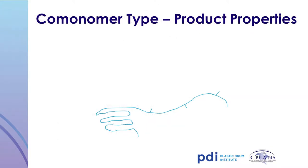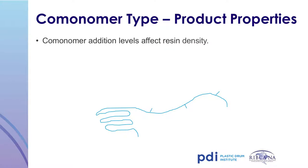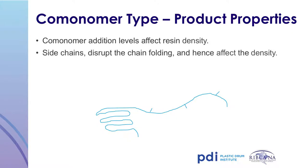The addition of co-monomer affects the density and stiffness of the resin. The side chains disrupt the folding mechanism of the long chains, lowering the resin's density and stiffness. Packaging manufacturers must balance resin properties to produce containers that can survive impact drop testing at cold temperatures and maintain the necessary stiffness. The co-monomer most commonly used for polyethylene in drum and IBC applications is hexene.